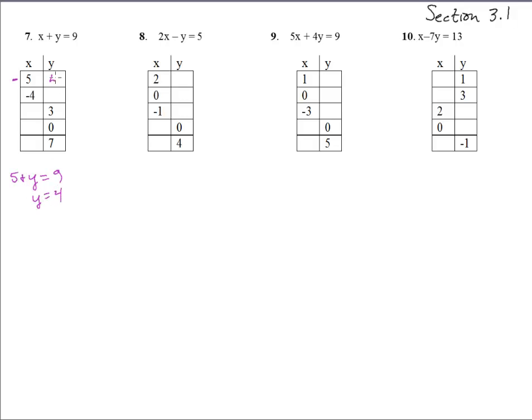So 5 goes with 4. The next one, negative 4 for x, so we put in negative 4 plus y equals 9. And we then add 4 to both sides and we get y equals 13. Next one.